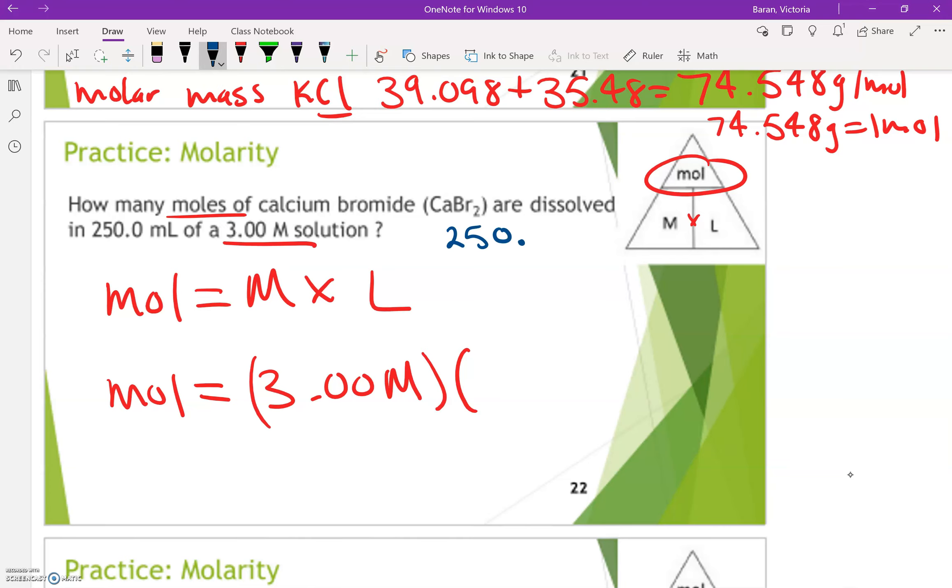Thinking back to our units of conversion, our metric units, to go from milliliters to liters, we're going to move one, two, three decimal places to the left. So now your decimal's here. So you would have 0.25 liters.